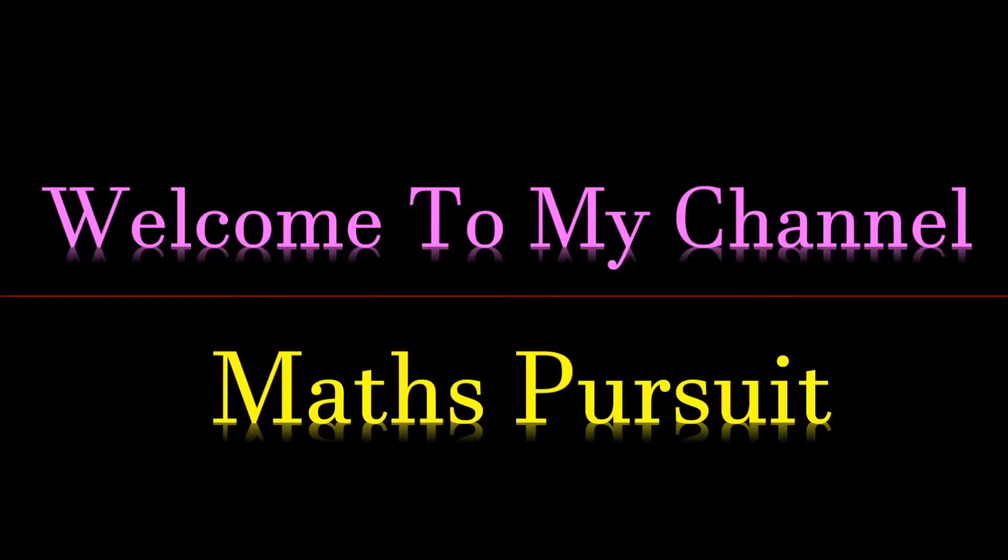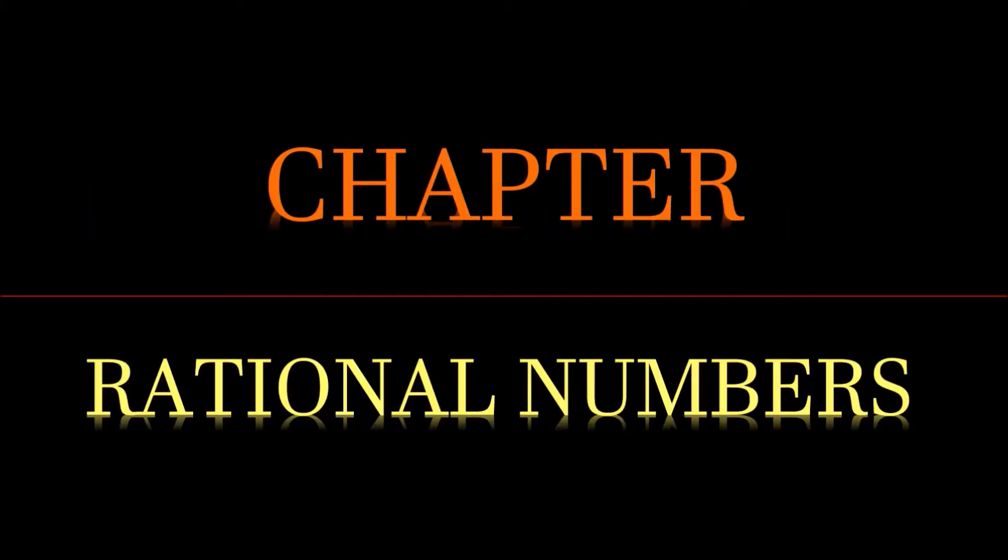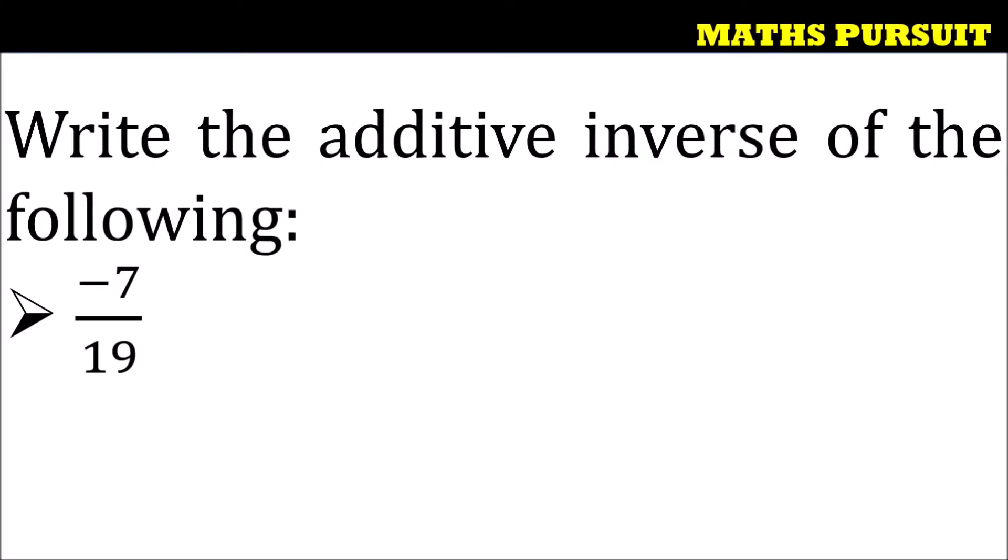Welcome to my channel Maths Pursuit. Today we will solve questions from the chapter Rational Numbers. The given question is: write the additive inverse of the following, and the given number is minus 7 upon 19.